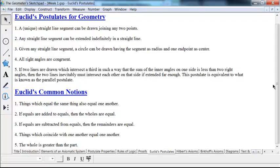Next is postulates. A straight line segment can be drawn joining any two points. Any straight line segment can be extended indefinitely in a straight line. Three, given any straight line segment, a circle can be drawn having this segment as a radius and one end point as center.